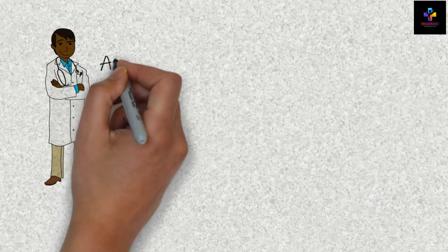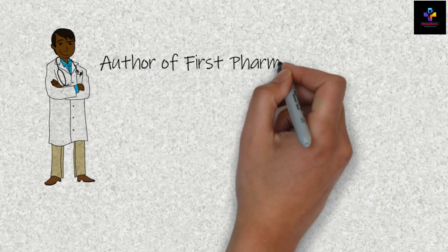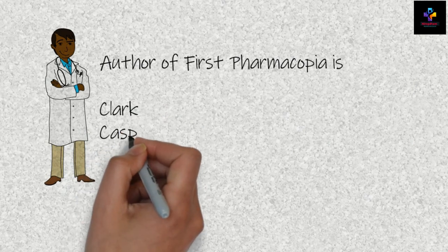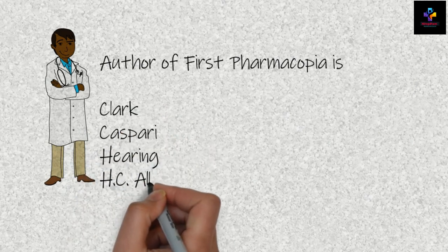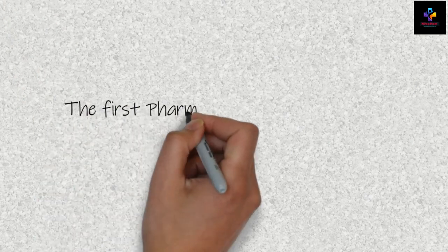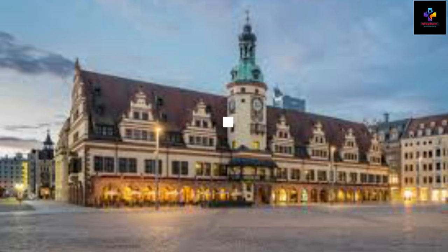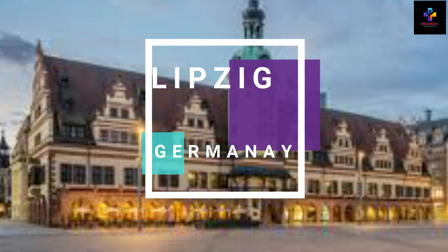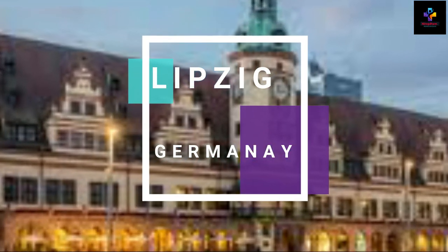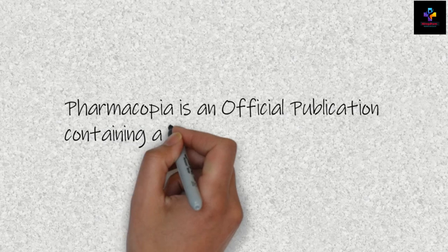The first question: author of the first homeopathic pharmacopoeia is Clark Kasperi of Leipzig in Germany. The first homeopathic pharmacopoeia was published by Kasperi of Leipzig in Germany. Pharmacopoeia is an official publication which contains the list of medicinal drugs.